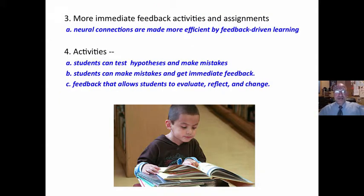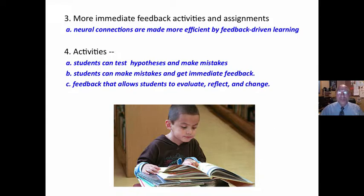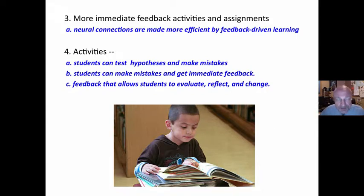This doesn't always have to be teacher feedback — it can be peer feedback as well. With more immediate feedback in activities and assignments, you create neural connections that are made more efficient by feedback-driven learning. Learning isn't a one-way street. The brain is designed to learn from mistakes, so we need to give students chances to make errors — activities where students can test hypotheses and get immediate feedback that allows them to evaluate, reflect, and change.